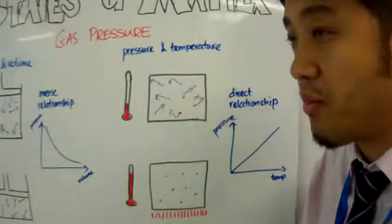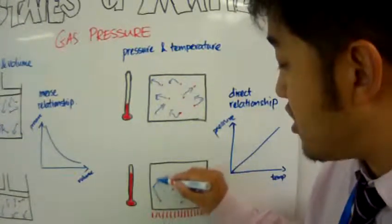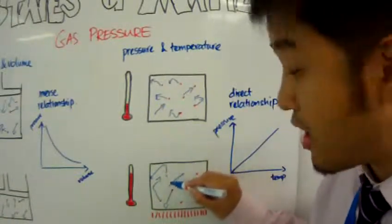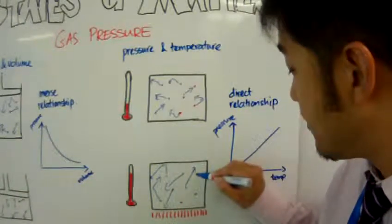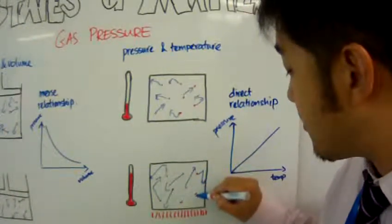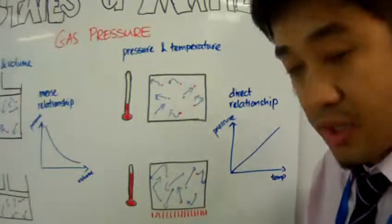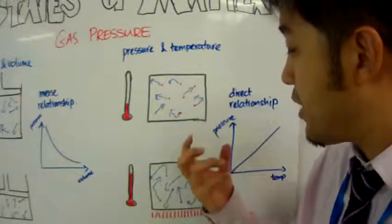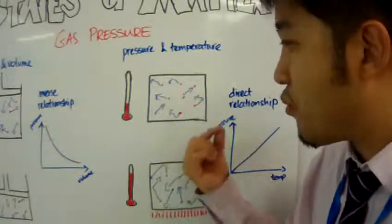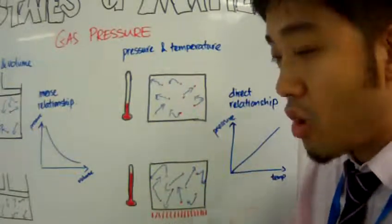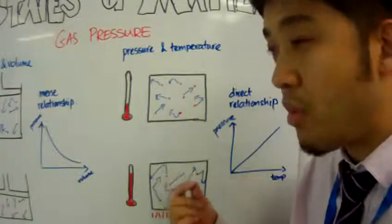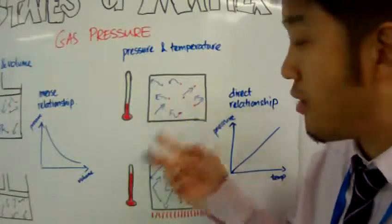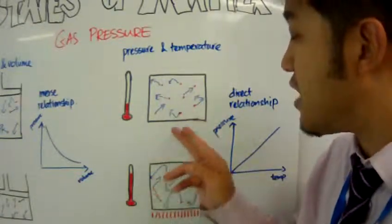The energy is absorbed by the particles, and the particles, on average, are now moving at a much higher rate, in random directions. When they're moving at a much higher rate, the time it takes to hit the wall of the container decreases dramatically. Therefore, when you take a specific period of time, there are more particle-to-wall collisions than previously. So the pressure has increased as well.